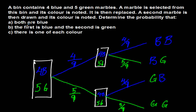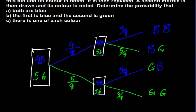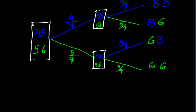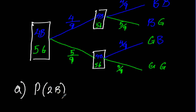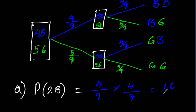Part A asks for both blue. That means blue then blue, which is 4 out of 9 times 4 out of 9. So the probability of 2 blue equals 4/9 × 4/9, and 4 times 4 is 16, 9 times 9 is 81. So the answer to Part A is 16/81.